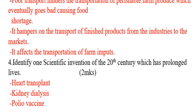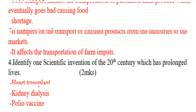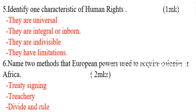The third way poor transport contributes to food shortage is that it affects the transportation of farm inputs. Question number four: identify one scientific invention of the 20th century which has prolonged lives. The answers are: heart transplant, kidney dialysis, and the polio vaccine.